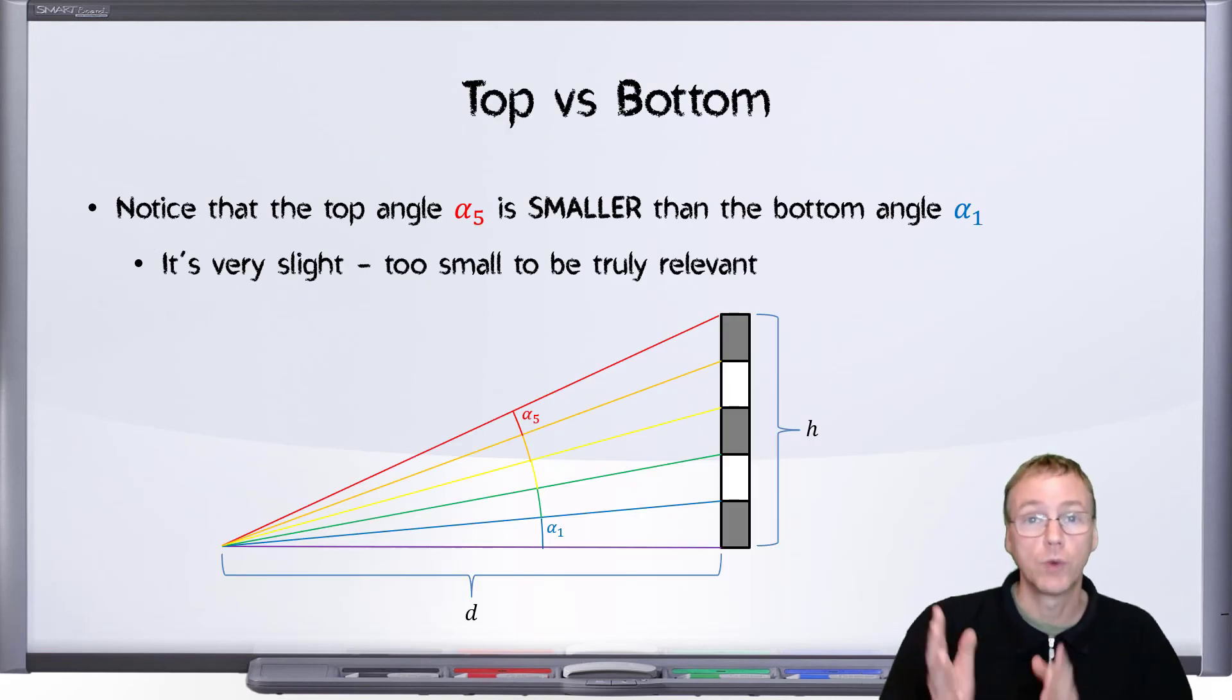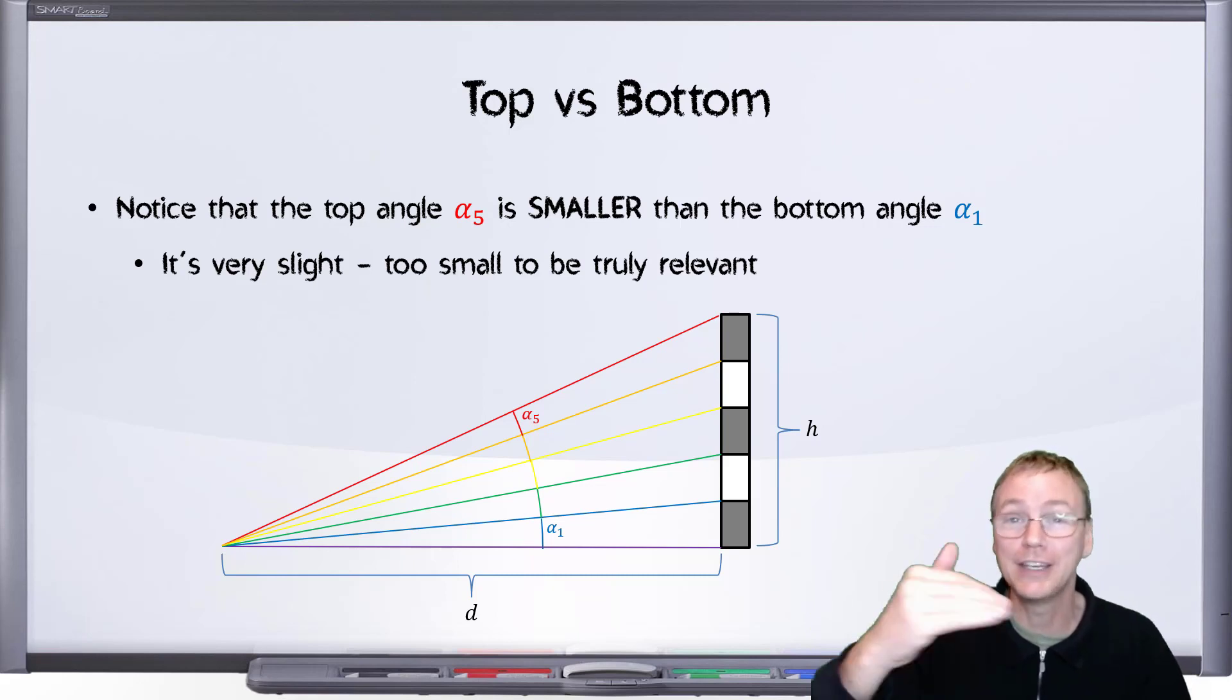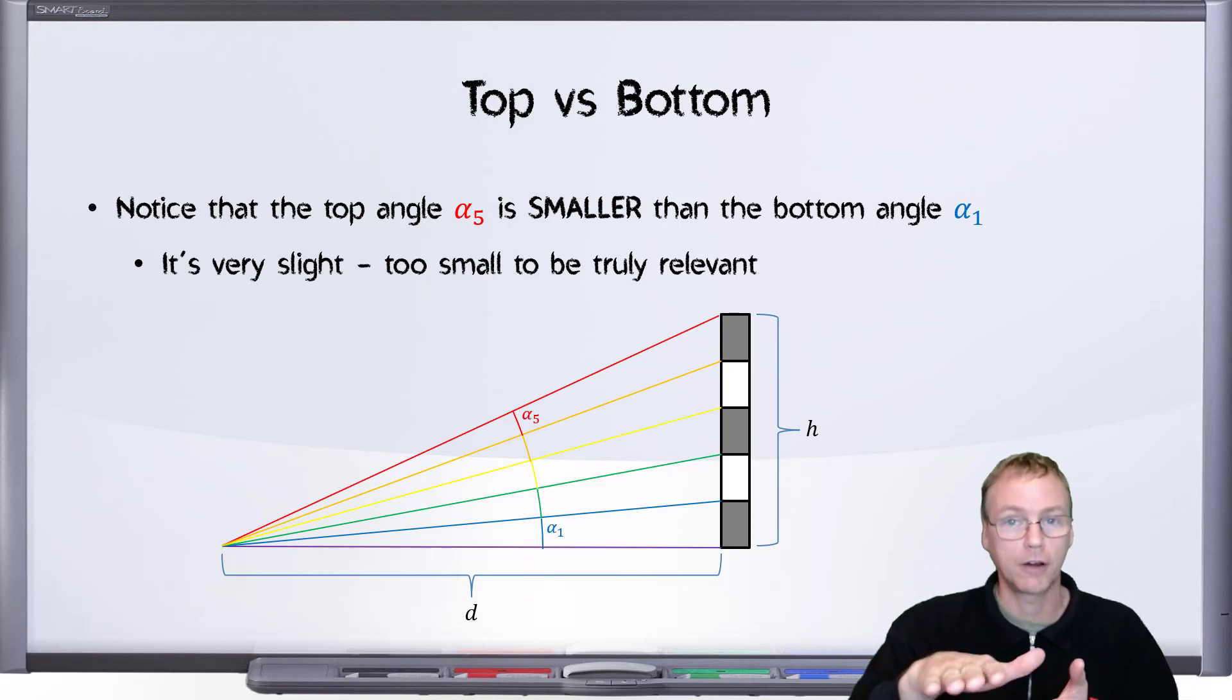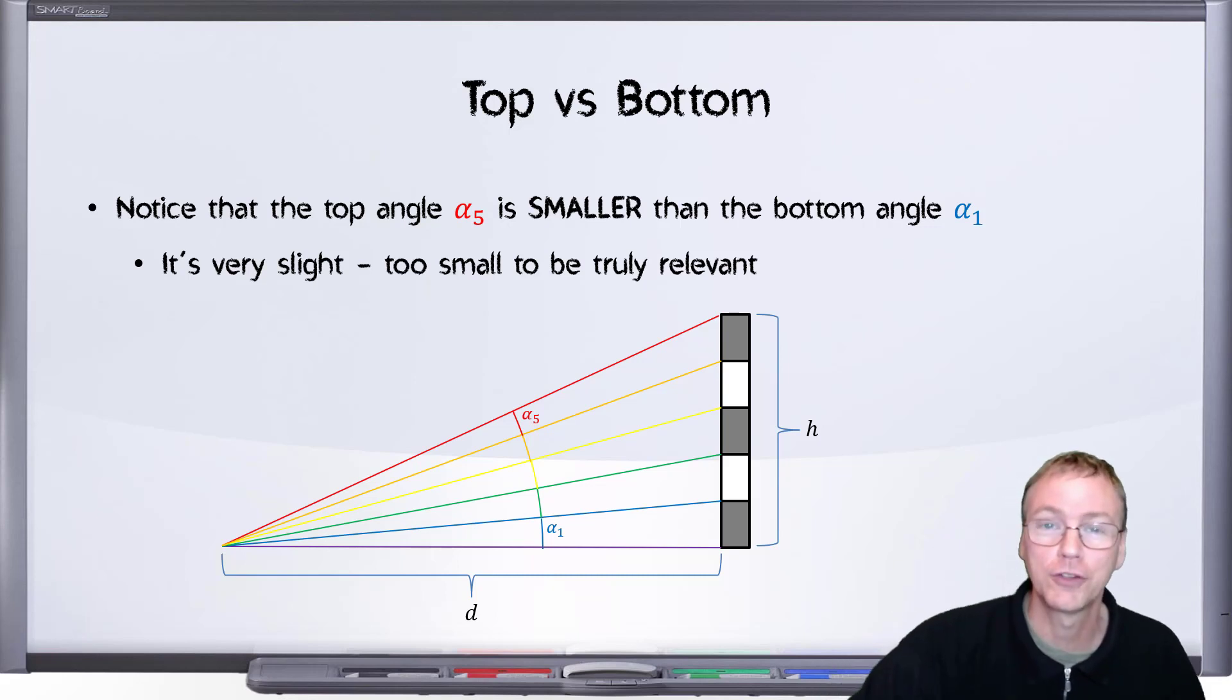Sometimes you'll hear the claim that the Rayleigh Criterion causes the bottom of objects to become indistinct against the ground they are next to because the angle between the ground and that object is too small to resolve.